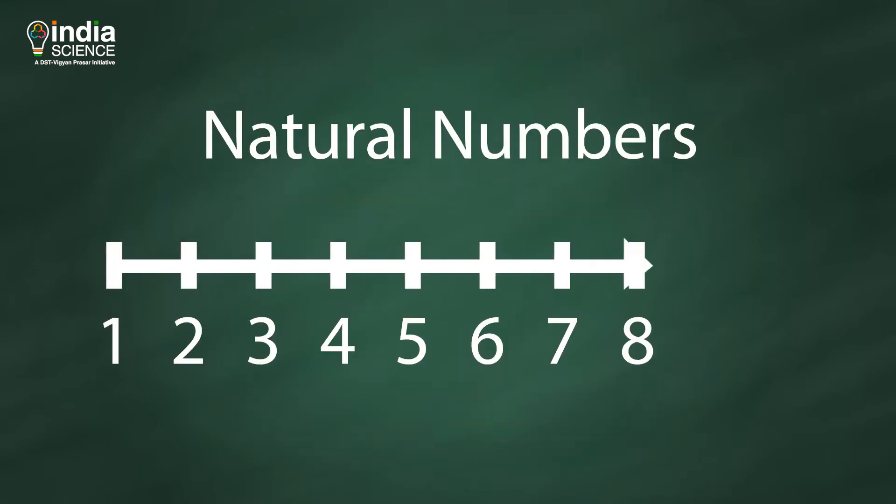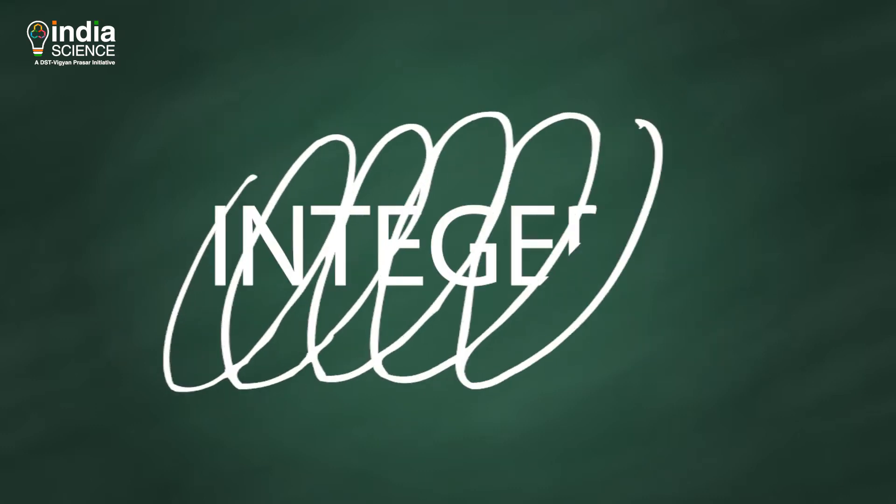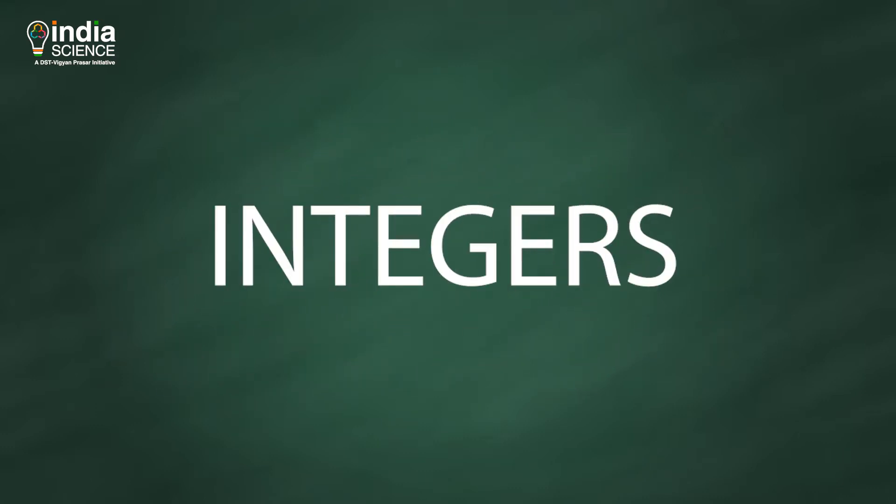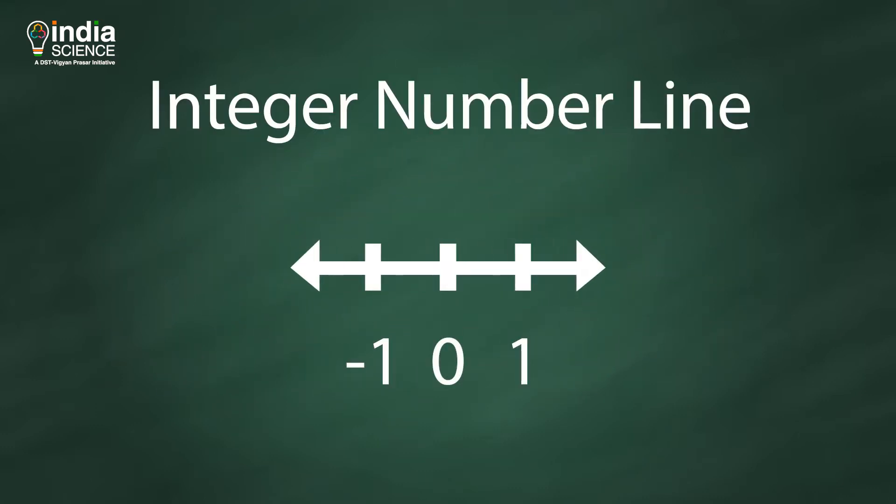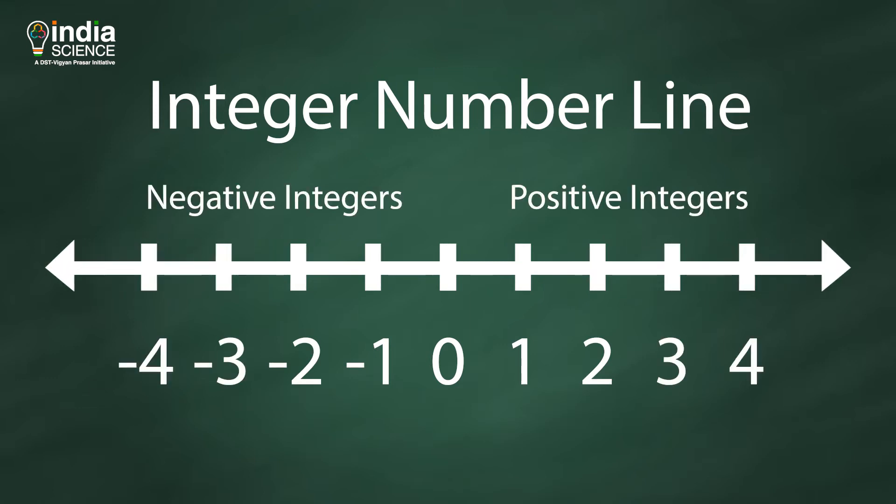One-to-one correspondence is possible with natural numbers, but what if one set is of integers? Integers are the numbers which also include negative numbers, like 0, 1, minus 1, 2, minus 2, 3, minus 3, and so on.